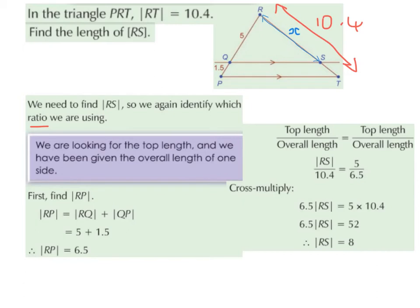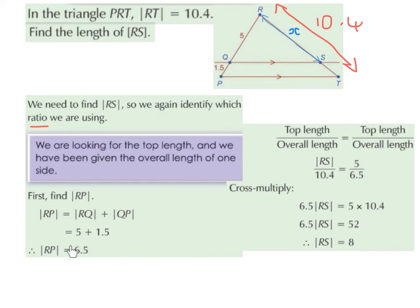First of all, we need to find RP, the overall length on the left. The length of RP is going to be RQ plus QP. The length of RQ is 5, the length of QP is 1.5, and 5 plus 1.5 is 6.5. So the length of RP is 6.5, and the overall length of the left-hand side is 6.5.